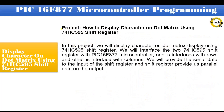In this project, we will display a character on a dot matrix display using the 74HC595 shift register. We will interface two 74HC595 shift registers with the PIC16F877 microcontroller — one interfaced with rows and the other with columns. We will provide serial data to the input of the shift register, and the shift register will provide parallel data on the output.